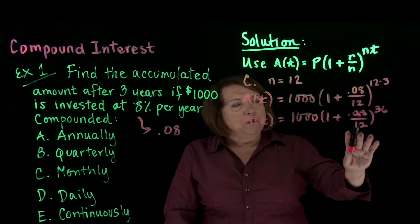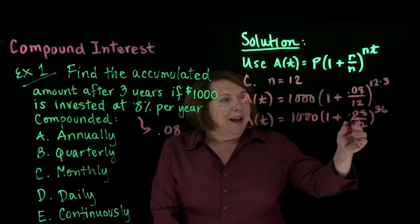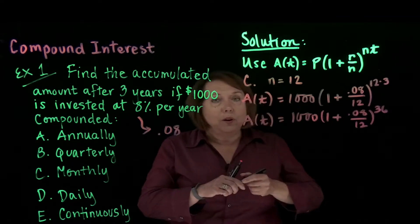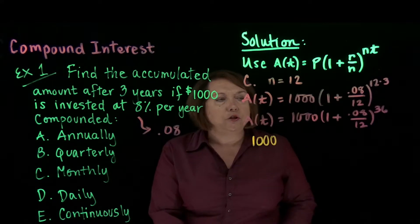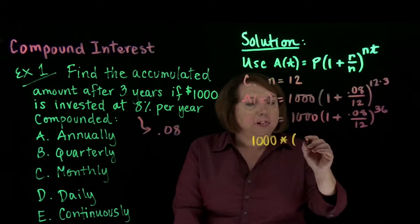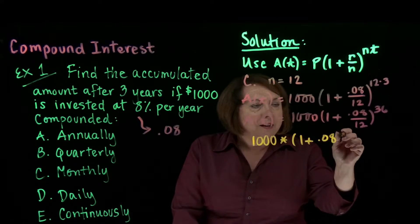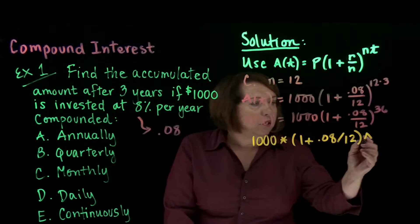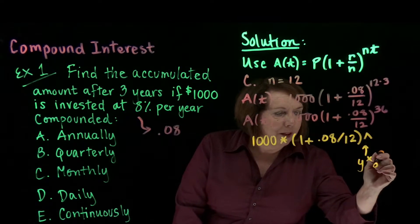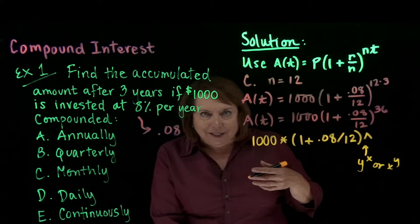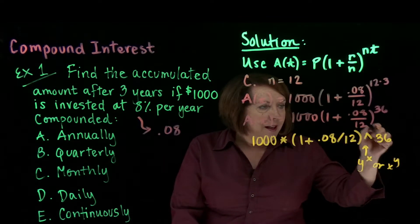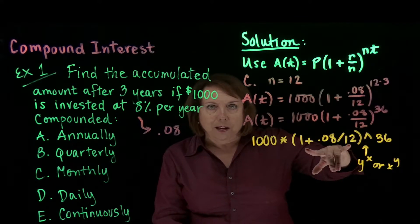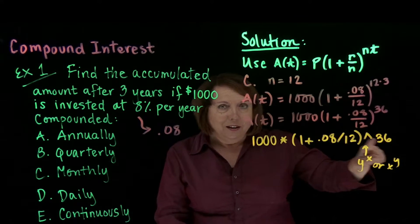So simplifying here, I'm not going to simplify this fraction because it's not a terminating decimal and I don't want to lose precision. So how you see this here is exactly how you should be inputting this into your calculator. A thousand times, and then open a parenthesis, 1 plus 0.08 divided by 12, close parenthesis. And then you should have some sort of button, a caret, or it could be y to the x or x to the y. It depends on your calculator. That will raise a quantity to a power.